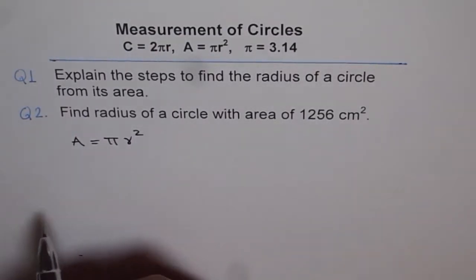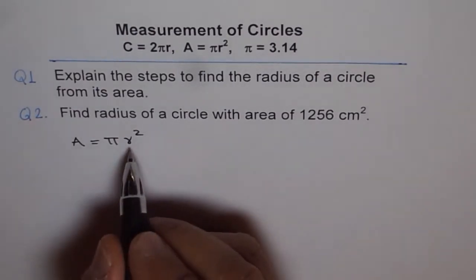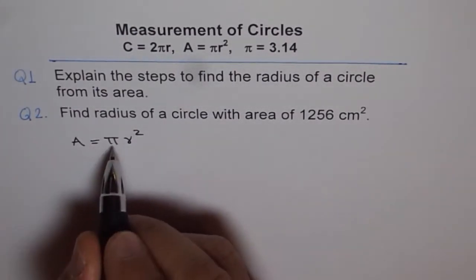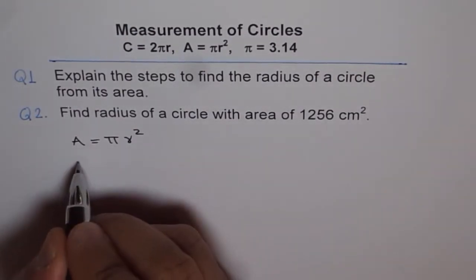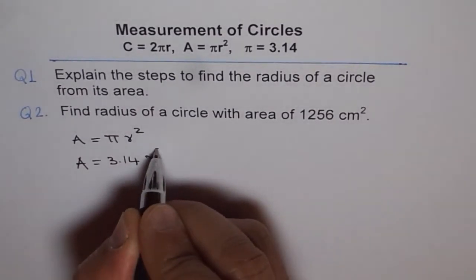Now from here we can find radius. So we will do backward calculations. To find radius, first let's divide by pi. So let's write like this: A = 3.14 × r².